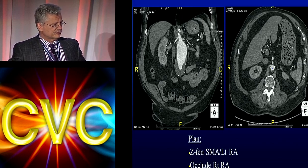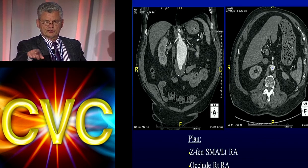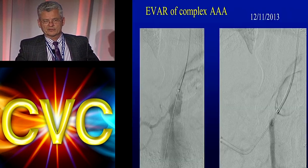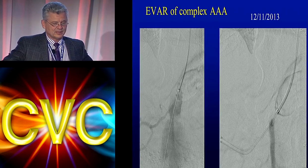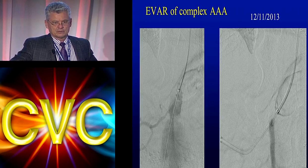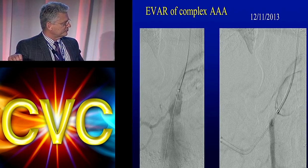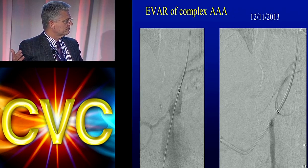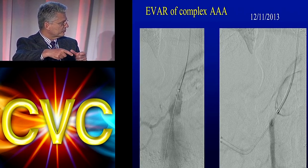We decided to actually sacrifice one of the renal arteries and do a fenestration for the SMA and for the left renal artery. He was consented for that. On the CT you can see the very close proximity. When the graft came in and I was reviewing the data, I thought maybe there was a way to preserve the right renal artery. The graft had two fenestrations — one for the SMA, one for the left renal — and we were going to cover the right renal because anatomically and from an engineering standpoint it was not possible to manufacture that graft differently.